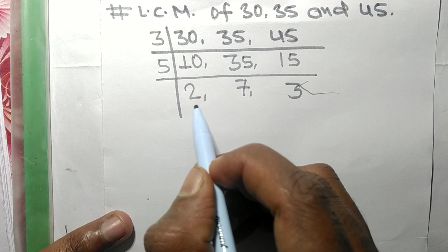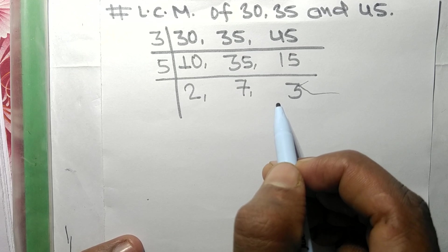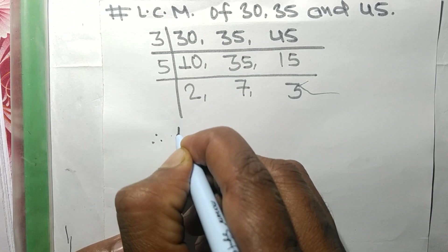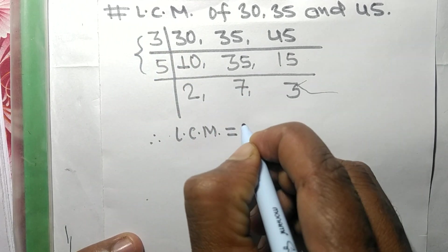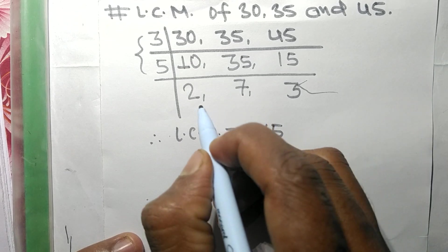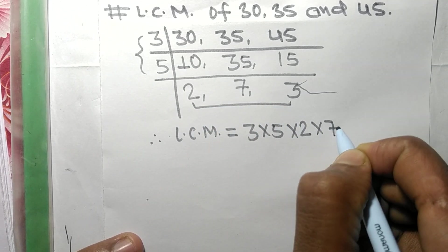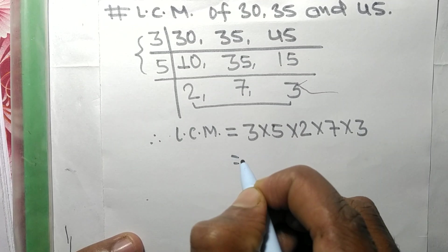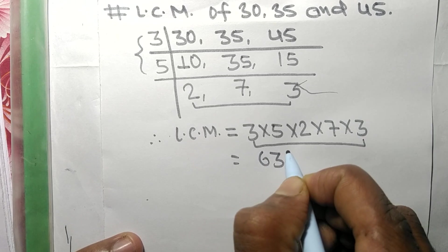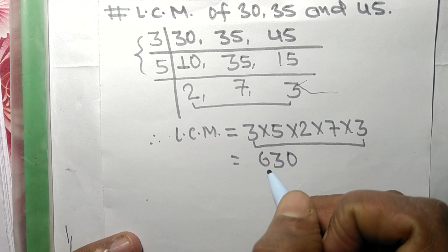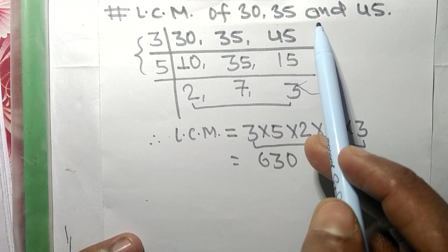Now the numbers 2, 7, and 3 are not exactly divisible by the same number, therefore the LCM is equal to, from this side it is 3 and 5, and from this side it is 2, 7, and 3. So by multiplying all these numbers we get 630. So 630 is the LCM of 30, 35, and 45.